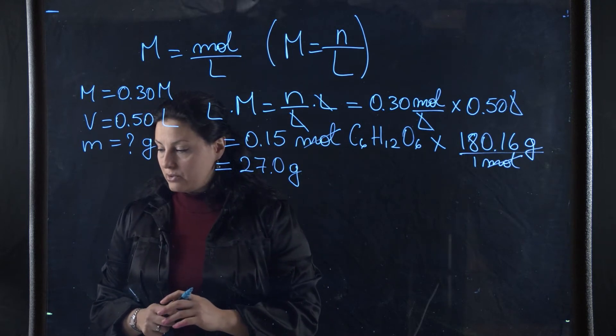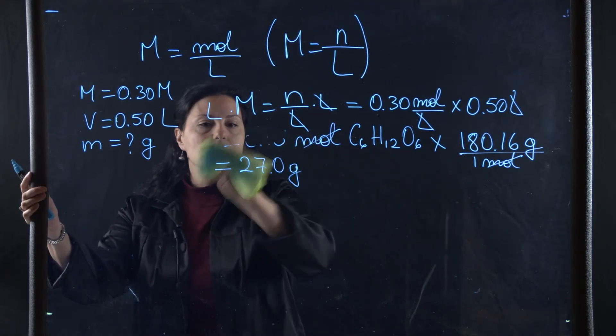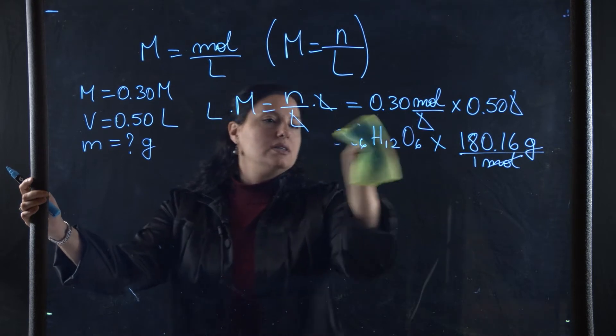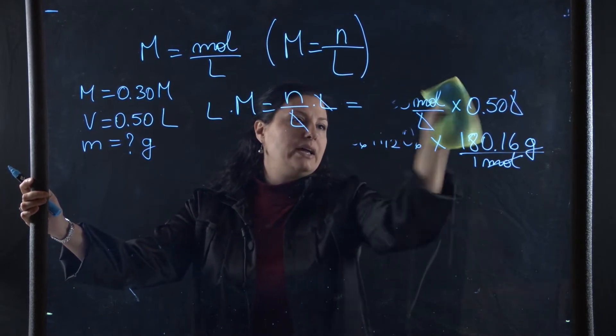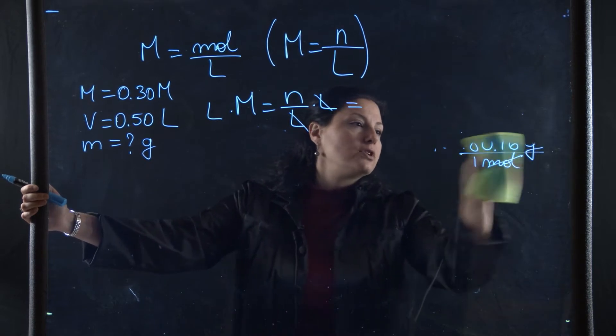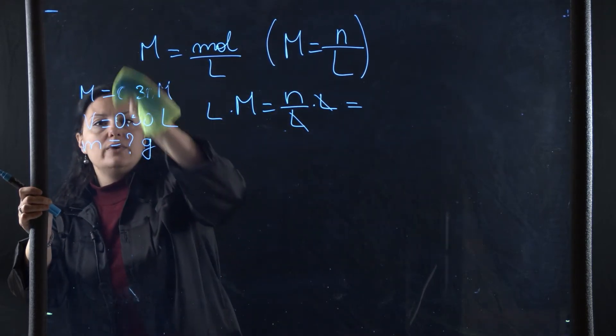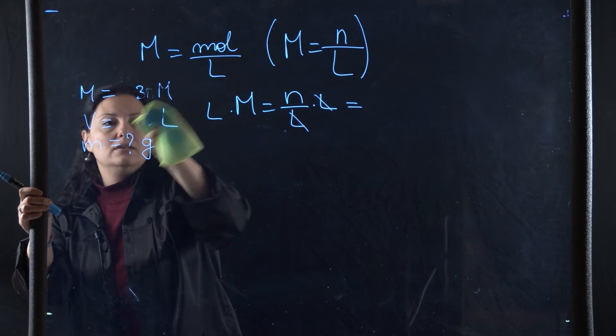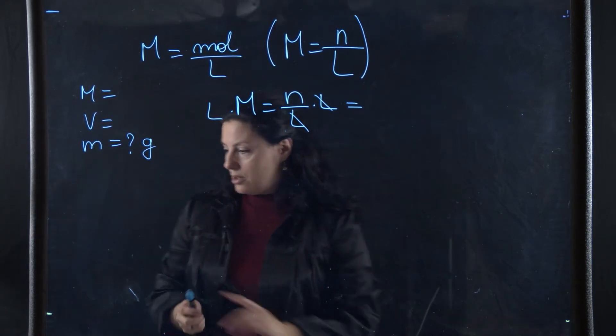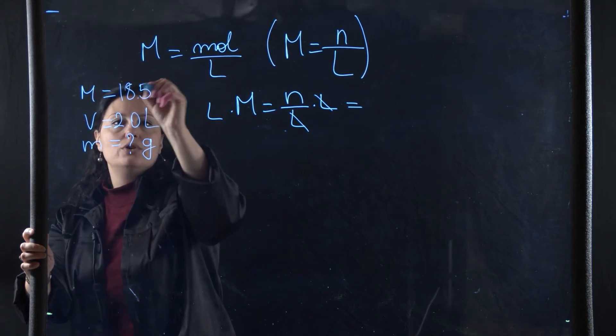Let's look at problem number two. Calculate the number of moles and the mass of the solute in two liters of 18.5 molar H2SO4. I'm going to erase the data for the previous problem, but it's pretty much the same idea. It asks for both the number of moles and the grams. To figure out the mass in grams, we have to figure out the moles first. The volume is 2 liters and the molarity is 18.5 molar, pretty concentrated H2SO4.